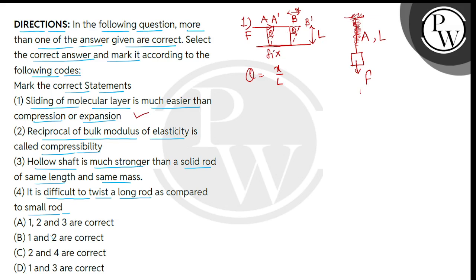Now, we can see statement 2, which is said that the bulk modulus is reciprocal. That is called as the compressibility. So, we represent the bulk modulus. We represent minus PV divided by del V, which is volume stress divided by volume strain.